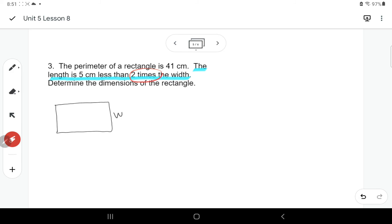And then I want to read through this again. The length is five centimeters less. So five centimeters less hopefully makes you think minus five. If something's five less. Then two times the width. So two times means multiply. So double. So I'm going to say the length is two times the width, but five centimeters less than that is minus five.